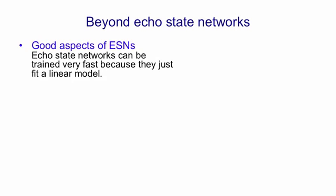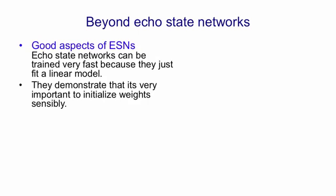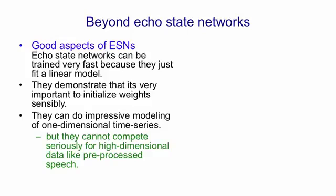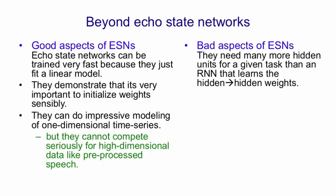There are some very good aspects of echo-state networks. They can be trained very fast because they're just fitting a linear model. They also demonstrate how important it is to initialize the hidden-to-hidden weights sensibly. And they can do quite impressive modeling of one-dimensional time series — that's where they excel. They can look at a time series for a while and then predict it very well a long time into the future. What they're not so good at is modeling high-dimensional data, like frames of acoustic coefficients or frames of video. In order to model data like that, they need many more hidden units than a recurrent neural network where you train the hidden-to-hidden connections.